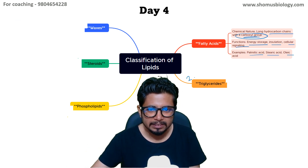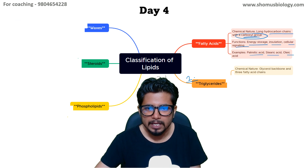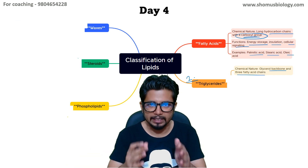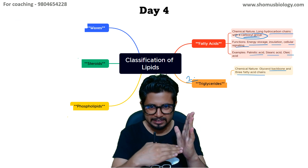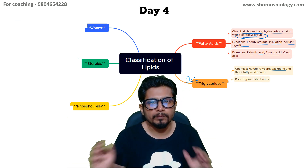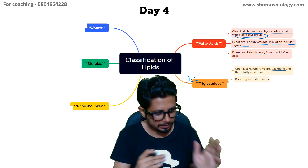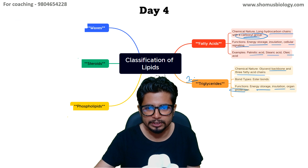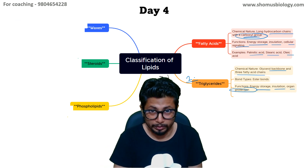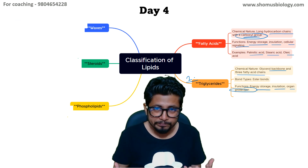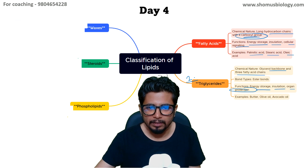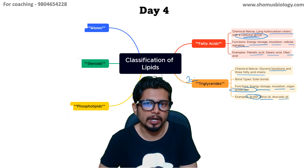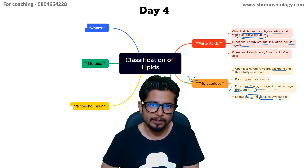The second type is triglycerides — another very common fat. By chemical nature, they have a glycerol backbone with three fatty acid chains linked to it via ester bonds. The function is energy storage, insulation, and organ protection, as triglycerides play a vital role as an energy storage component in adipose tissue. Examples include butter, olive oil, and avocado oil. In our body, serum triglyceride is a very important parameter when checking the lipid profile.